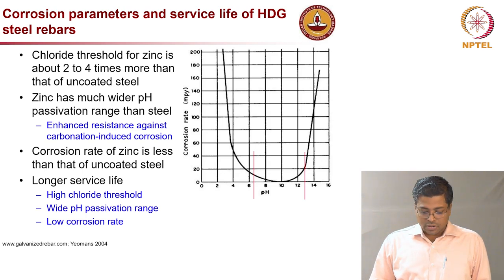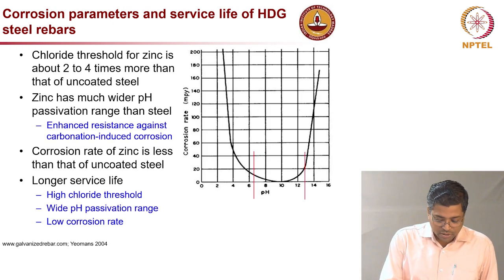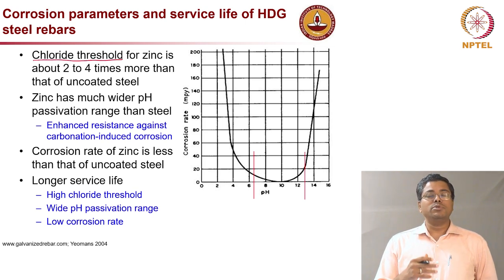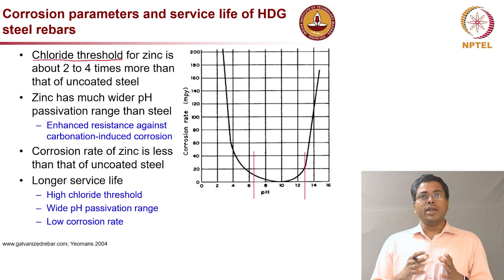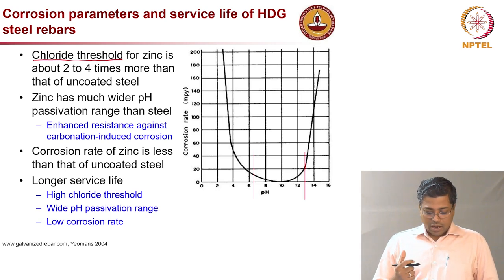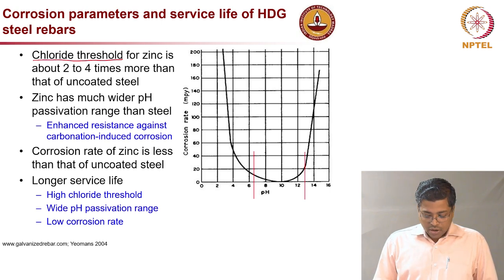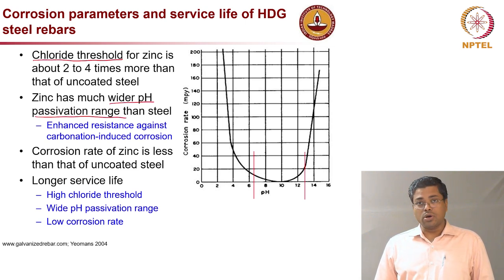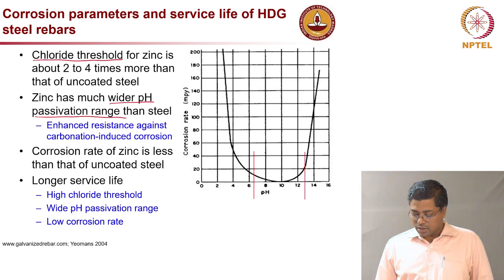Key corrosion parameters for determining the service life of systems with HDG steel rebars: first, the chloride threshold is about two to four times more than that of uncoated steel. The chloride threshold is the amount of chloride required to initiate corrosion — needing more means more time to initiate corrosion and enhanced service life. Also, zinc has a much wider passivation range, which plays a major role for carbonation-induced corrosion.